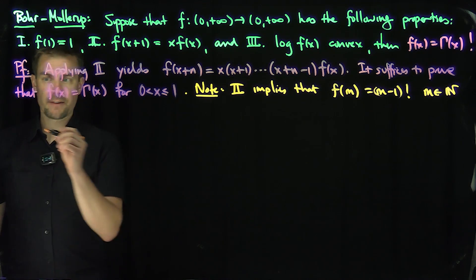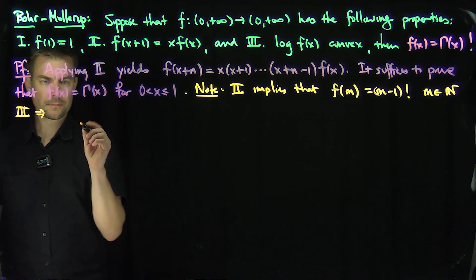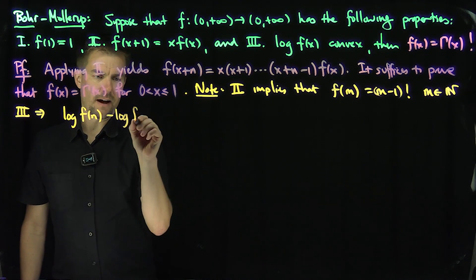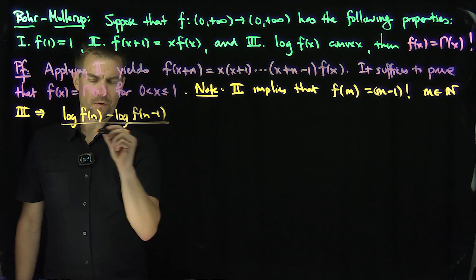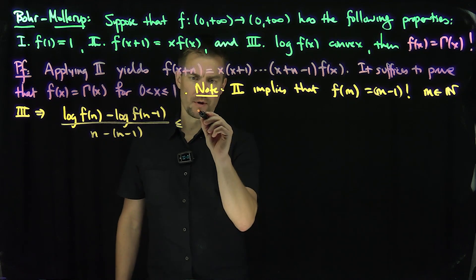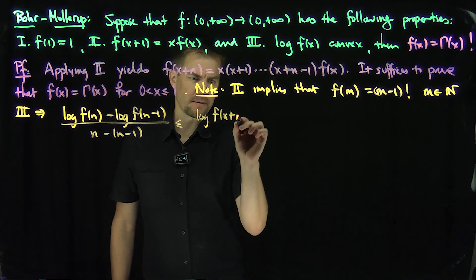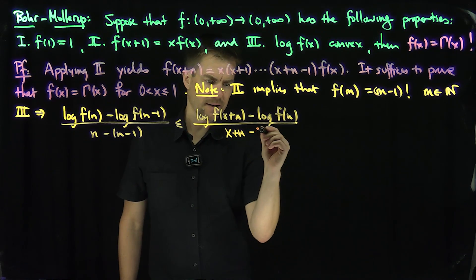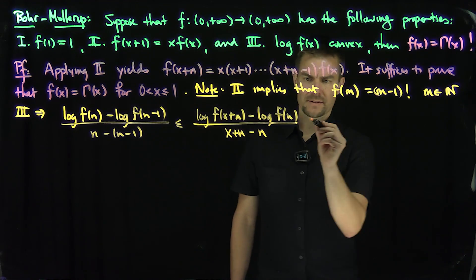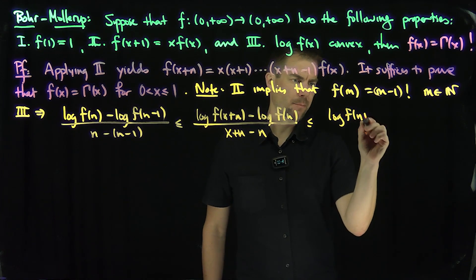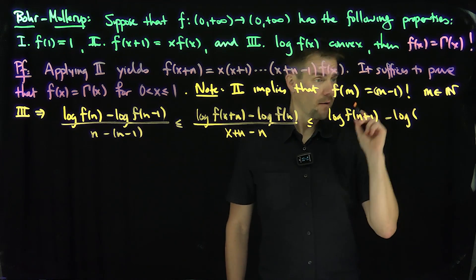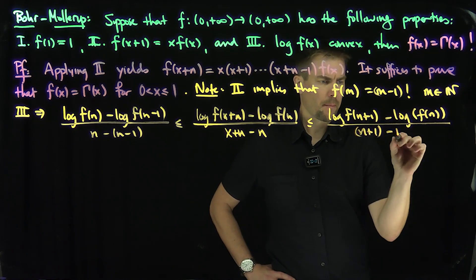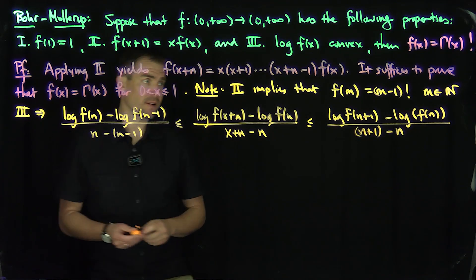Now we're going to use log convexity. Property 3 implies that [log f(n) − log f(n−1)] / [n − (n−1)] ≤ [log f(x+n) − log f(n)] / [x+n − n] ≤ [log f(n+1) − log f(n)] / [(n+1) − n]. That's the definition of log convexity.